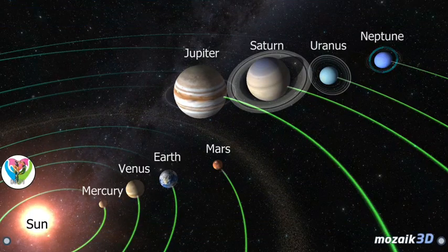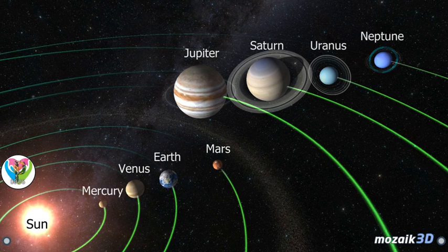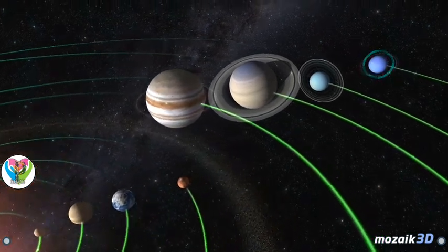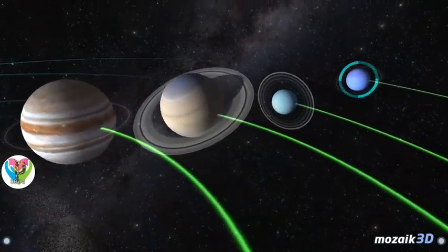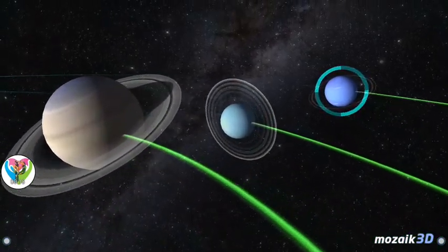In 1846, based on the calculations of Urbain Le Verrier after analyzing perturbations in the orbit of Uranus, Neptune was discovered. Independently of Le Verrier, John Couch Adams developed his own calculations, but these were only published later.